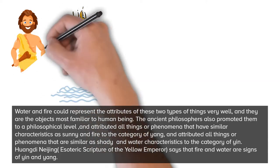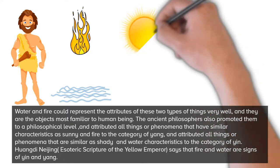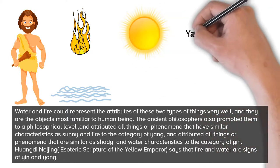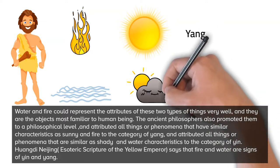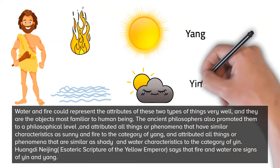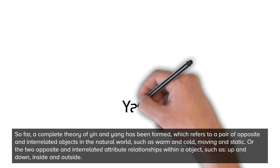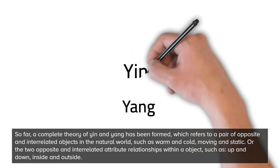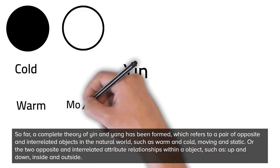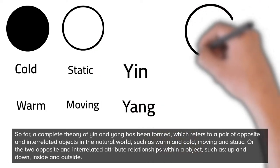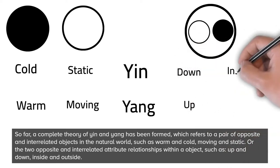The ancient philosophers promoted these ideas to a philosophical level, and attributed all things or phenomena that have similar characteristics to either the sunny or water characteristics to the category of yin or yang. The Huangdi Neijing, the Yellow Emperor's Classic of Medicine, says that fire and water are signs of yin and yang. A complete theory of yin and yang was formed, referring to a pair of opposite and interrelated objects in the natural world, such as warm and cold, moving and static, or the two opposite and interrelated attribute relationships within an object, such as up and down, inside and outside.